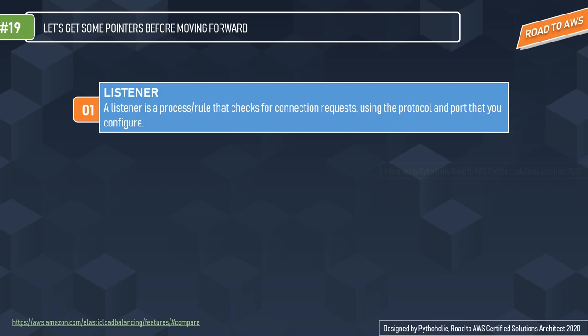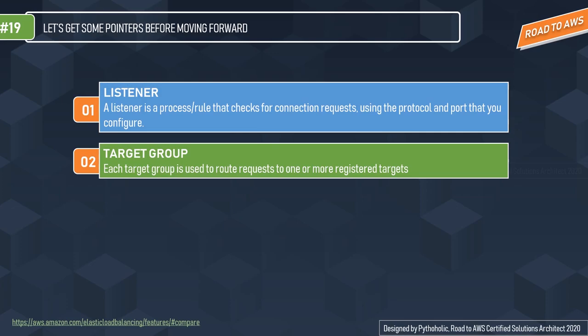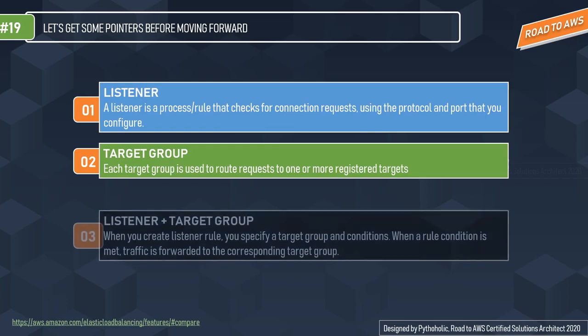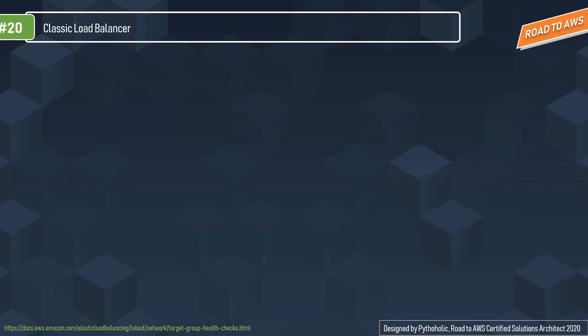Before moving forward, let's clarify some important terms. A listener is a rule that checks for connection requests using the protocol or port configured — TCP, HTTP, or TLS — and determines how the load balancer routes traffic to one or more target groups. A target group contains either instances or IPs, used to route requests to one or more registered targets. When you create a listener rule, you specify a target group, which handles routing traffic to the configured targets.